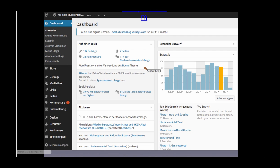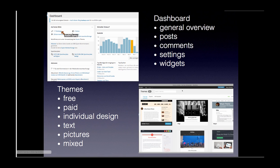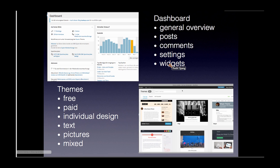Let's look at the WordPress dashboard — that's the control panel. You have statistics, a lot of information, and settings on the left side. You can see 117 posts, many comments, two pages, and a lot of visitors. You can manage posts, comments, and settings. A very interesting feature is widgets — you can enhance your blog with social media integrations, like a Twitter widget to show a Twitter wall on your front page, or a Facebook like button.